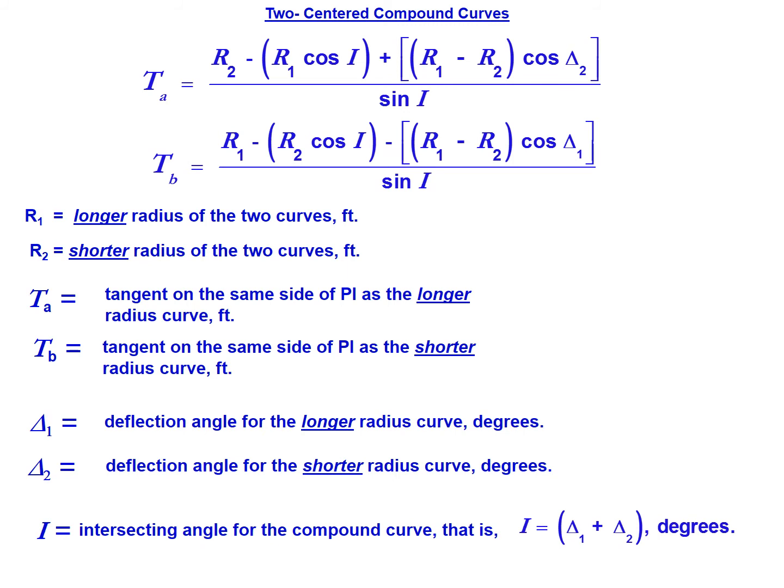If you're looking to solve for the stationing along the curve, you'll need to determine the appropriate tangent between the PI and the PC, calculate that tangent length whether it's T A or T B, subtract that from the PI to get the PC, and then add each of the appropriate lengths along the curve to reach the PT station.